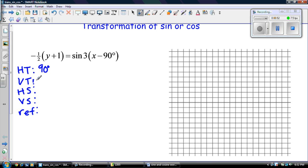My VT with the y, and it's the opposite, minus 1. My HS is the reciprocal of the number inside the brackets here, and that's 1 over 3. The important thing to remember for 2205 students is that sometimes these brackets may not be here, and if they're not, that means you have to factor first. You can't have a number in front of the x, it has to be just by itself.